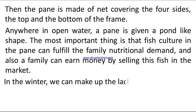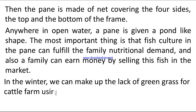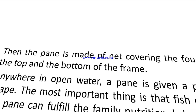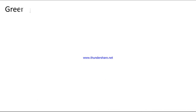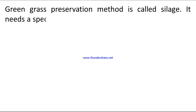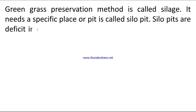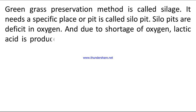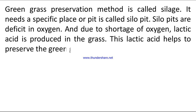Answer 7: In the winter, we can make up the lack of green grass for a cattle farm using the green grass preservation method. This method is called silage. It needs a specific place called a silo pit. Silo pits are deficient in oxygen, and due to the shortage of oxygen, lactic acid is produced in the grass. This lactic acid helps to preserve the green grass.